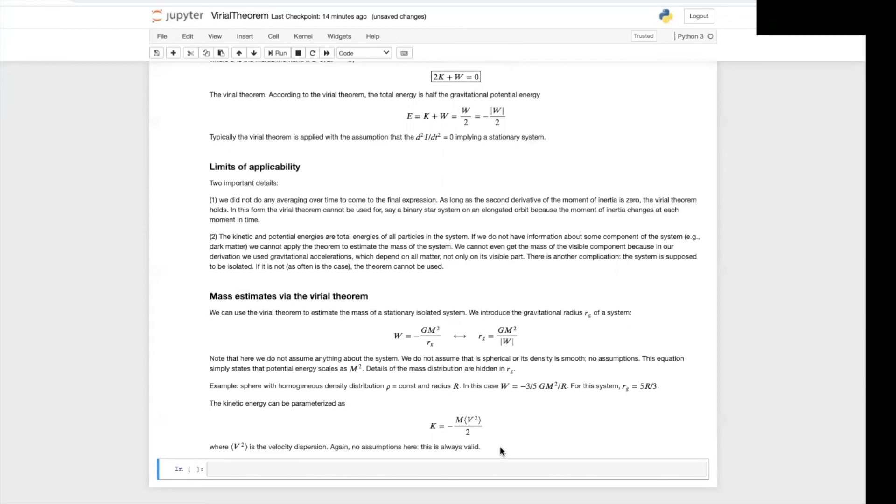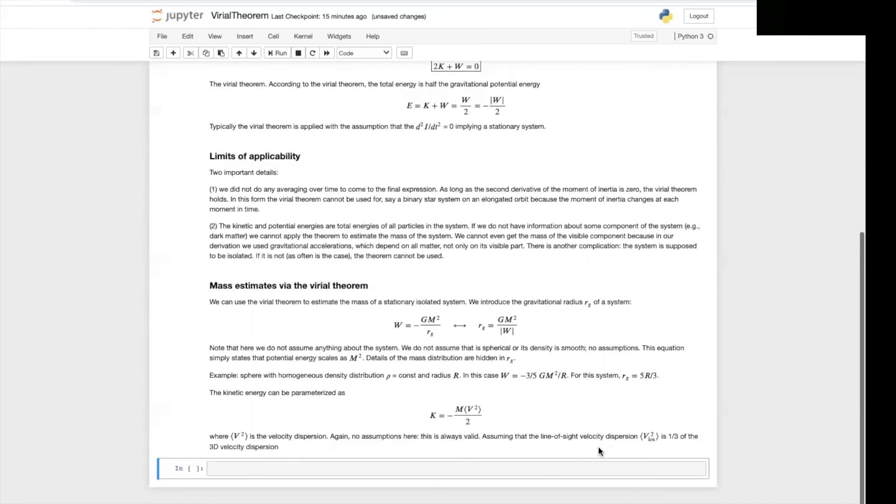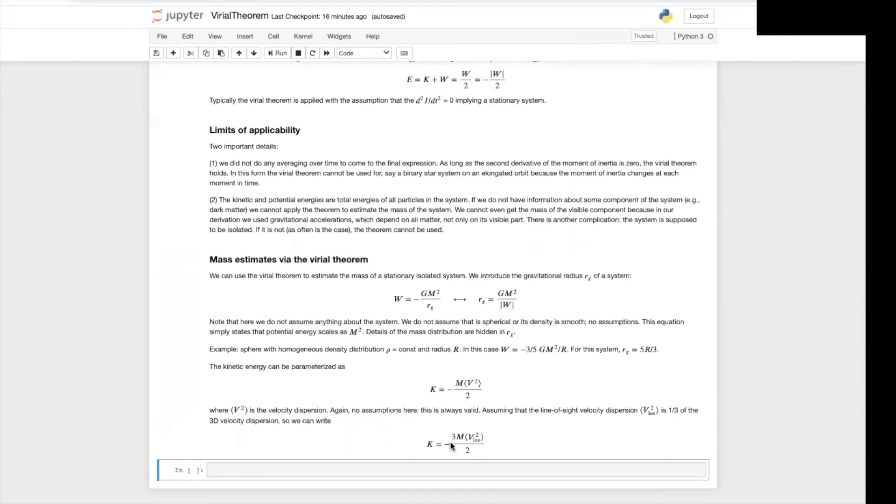Now we do not always have the total velocity of the system, but we always have the line of sight velocity. So we can assume that the line of sight velocity dispersion is a third of the 3d velocity dispersion. This applies if the system has equipartition of kinetic energy over the three directions.